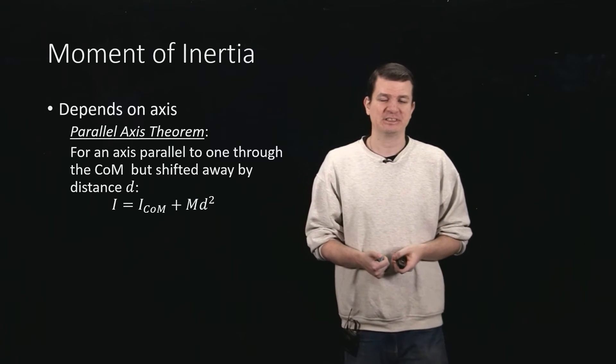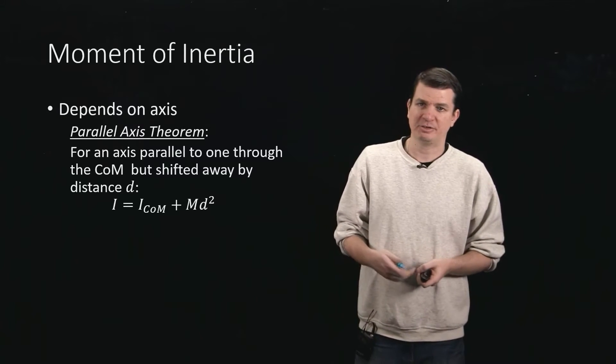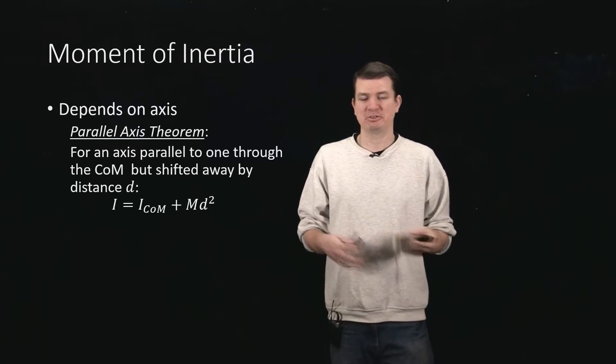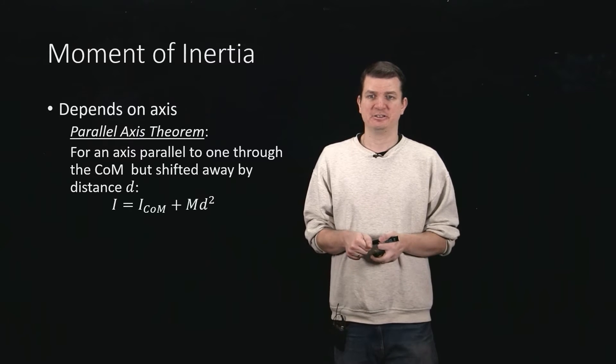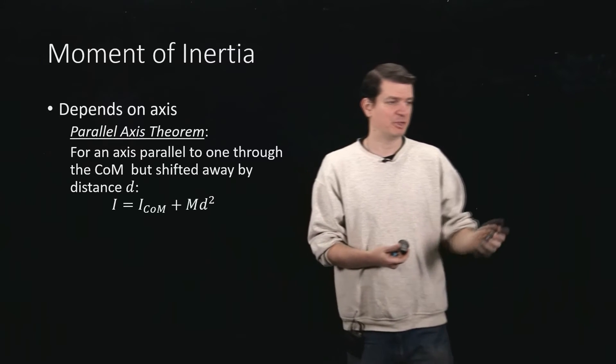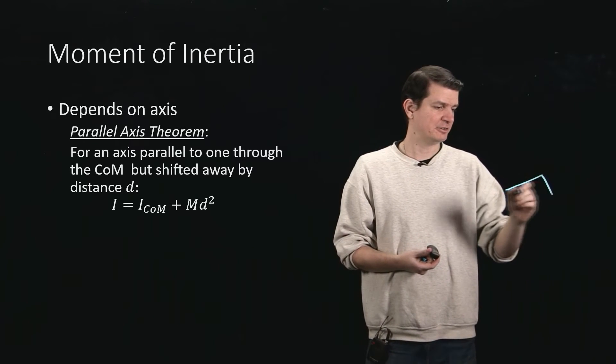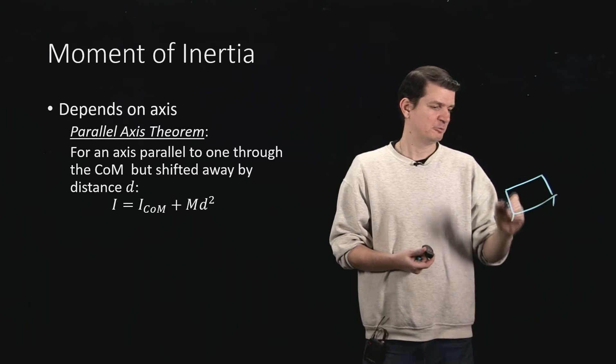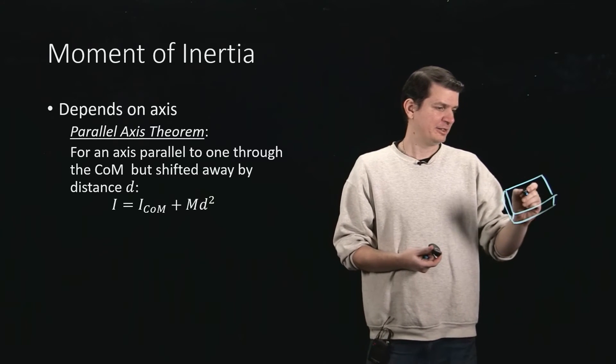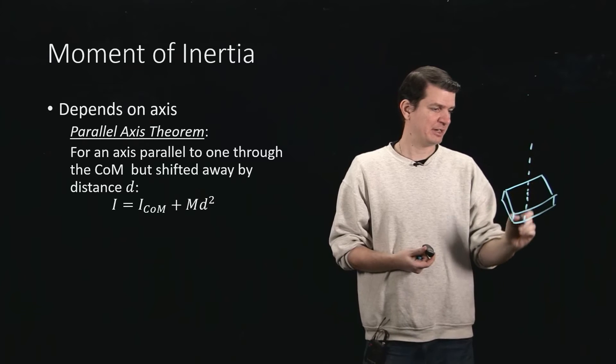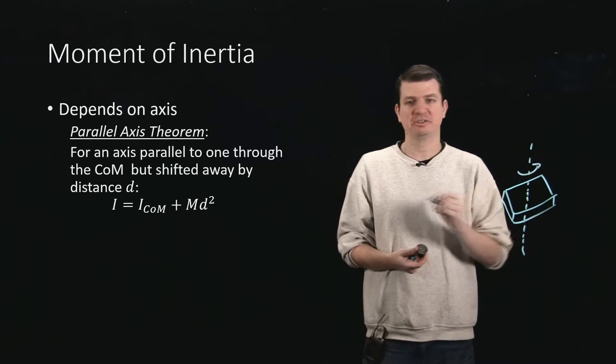And that's where this thing comes in. It's called the parallel axis theorem, and what it says is that if I've got some axis, I was rotating say a rectangle initially around an axis through its center of mass, I have a little rectangular something, and then I've got an axis through its center of mass around which I'm rotating.